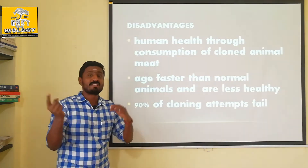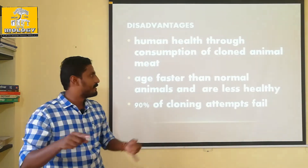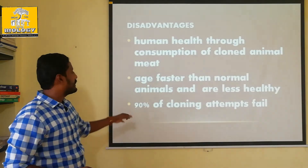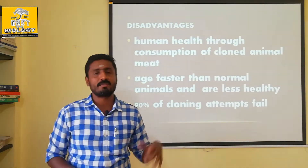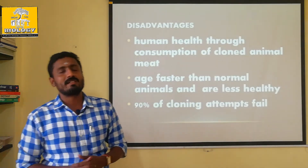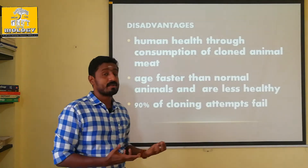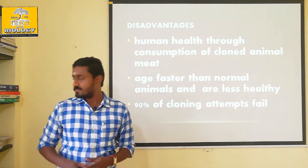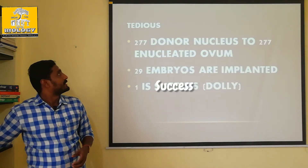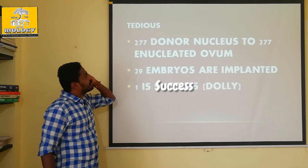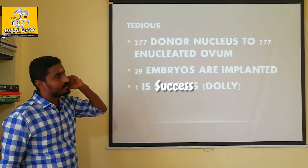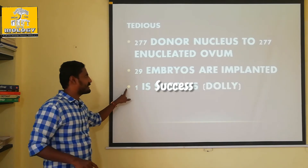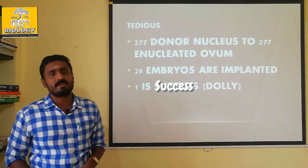After all, 90% of cloning attempts fail. We can tell you that it's a 90% failure rate. It is very tedious. You have done a donor nucleus, a 21st implantation, a blastocyst stage, and only one is successful.